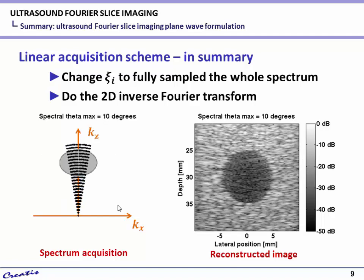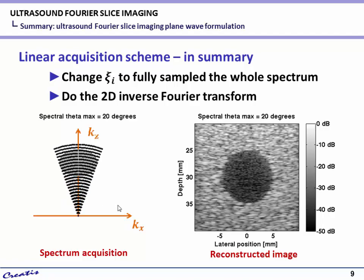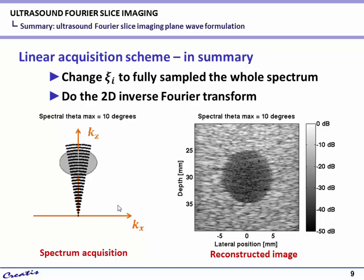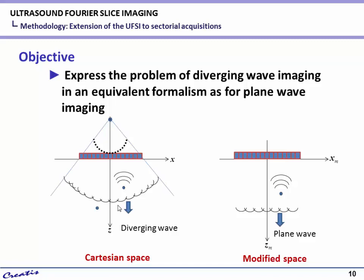This figure shows the influence of the maximum angle C applied in reception on the image quality. We can see that after fully sampling the object spectrum, the image quality will not change. The objective is to express the problem of diverging wave imaging in an equivalent formalism as for plane wave imaging — meaning a medium in Cartesian space insonified by a diverging wave can be considered as a medium in modified space with plane wave insonification.